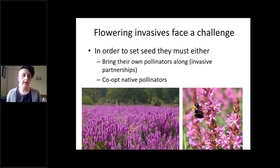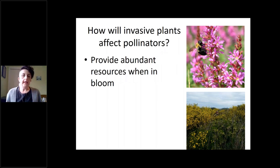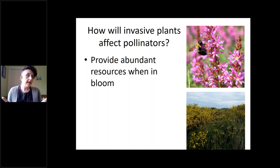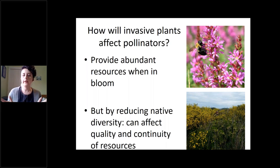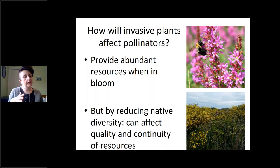The other thing an invasive plant can do is co-opt the local community of native pollinators to act as its own pollinators. In the case of purple loosestrife, native bees are perfectly happy to visit and pollinate the abundant flowers. From the perspective of a bee, food is food — it doesn't matter if it's an invasive plant or a native plant. If invasives form large monocultures, they provide abundant resources when in bloom, but they reduce native diversity and affect the quality and continuity of resources. A monoculture of scotch broom offers a bonanza of food during flowering, but once that's done, there's nothing, whereas a diverse native community provides overlapping early and late flowering plants creating continuity over the season.